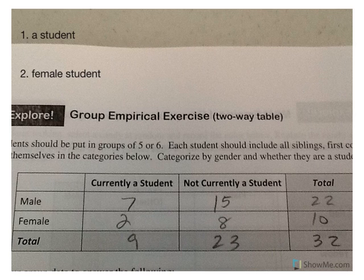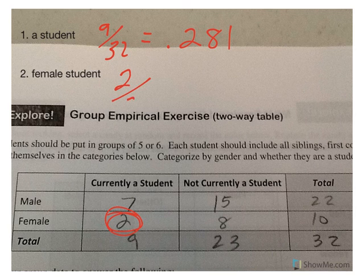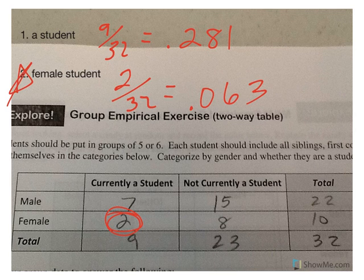The first one: likelihood someone is a student. You have 9 students out of 32 people total, so we're at .281. I'm going with 3 decimal points. Number two: a female student. I have 2 female students, so I would have 2 over 32 for a .063. We're going to need this answer again in just a minute.